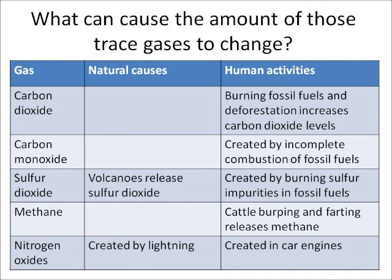Methane is released when cows and other cattle burp and fart, and that releases lots of methane — so that's going up as we have more cows on the planet. And lastly, there are nitrogen oxides, created both by lightning, which is a natural cause, but also created in car engines.